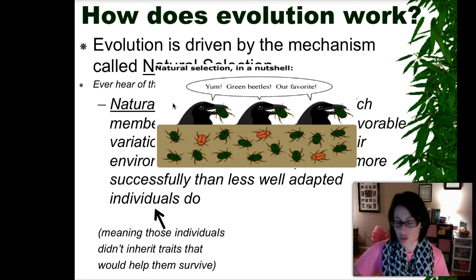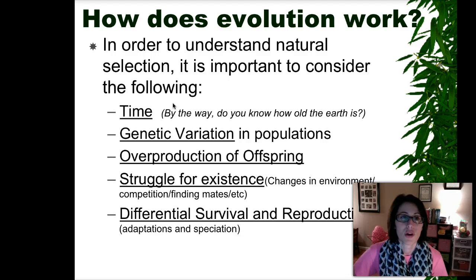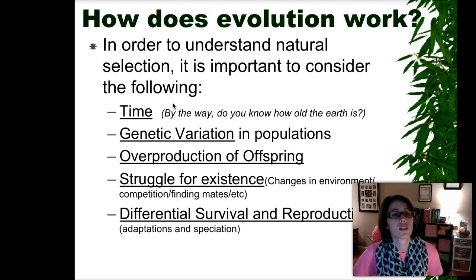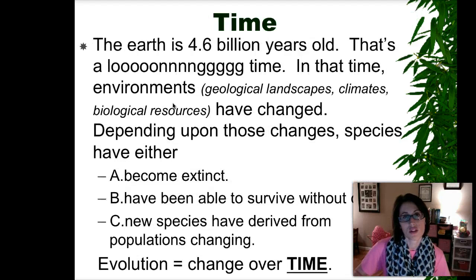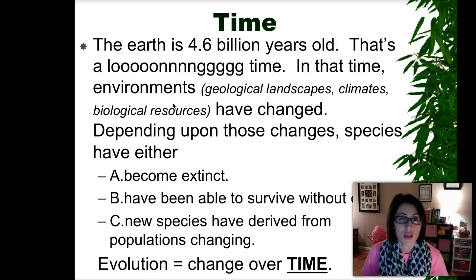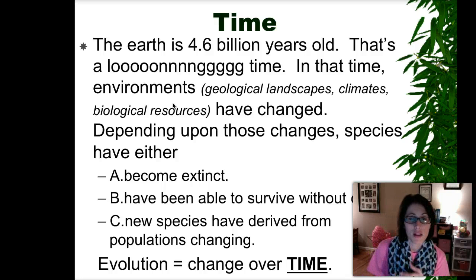So how exactly does evolution work? In order to understand natural selection, you have to consider these features: time, genetic variation, overproduction, struggle for existence — which is talking about competition — and then survival and reproduction. We have established that the earth is 4.6 billion years old, and in that amount of time environments have changed — geological landscapes, climates, and biological resources.